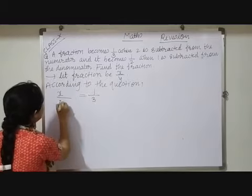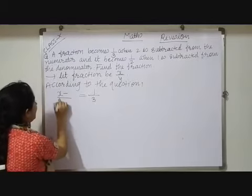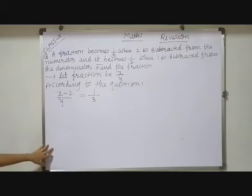So x, fraction is x by y, x upon y and 2 is subtracted from the numerator. And it becomes 1 by 2.